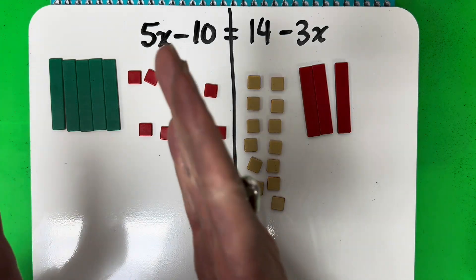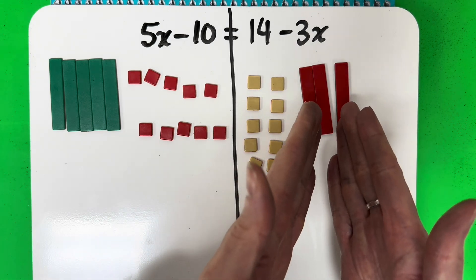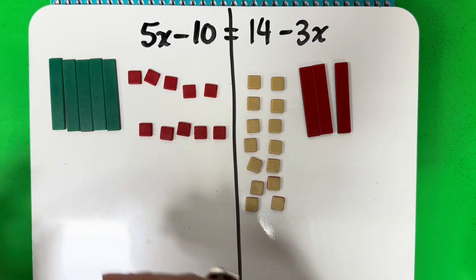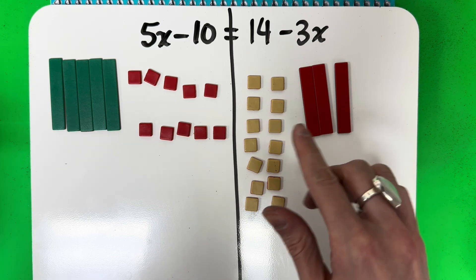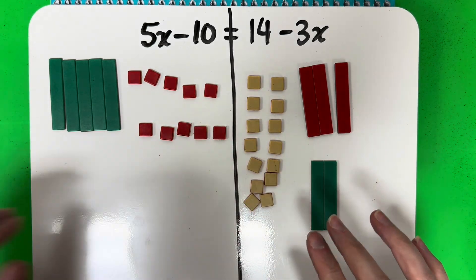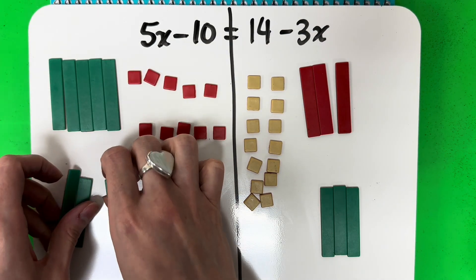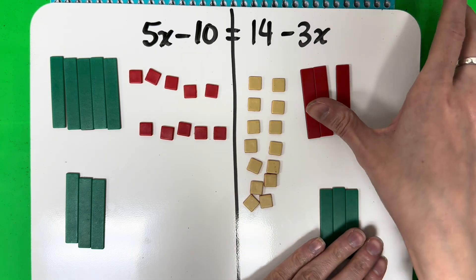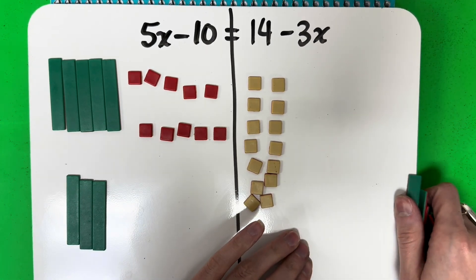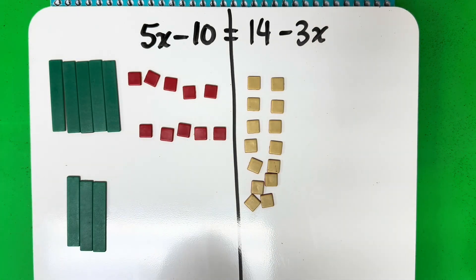Remember, I want all my rectangles on the left and all my squares on the right. The red rectangles on the right are not good — they need to be canceled out and moved over. If I have three negative or three reds, I'm going to put in three positive or three greens. And whatever you do to one side, you do to the other. So 3x minus 3x cancels — those are zero pairs, they go away. Nothing cancels on the left — those are all green, so don't take anything away from there. Now we're going to cancel the squares and move them to the other side.